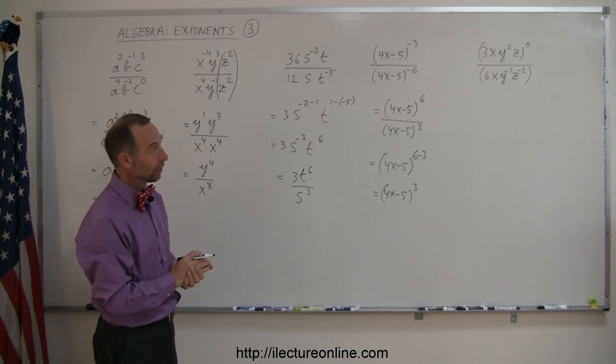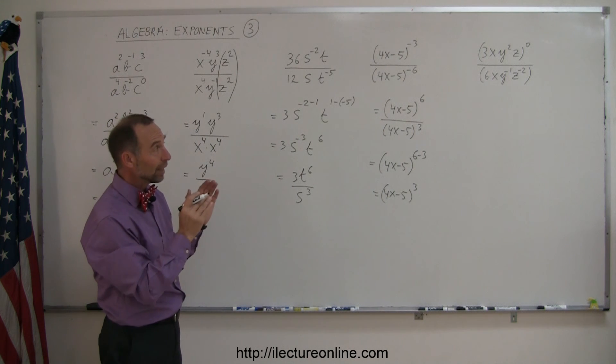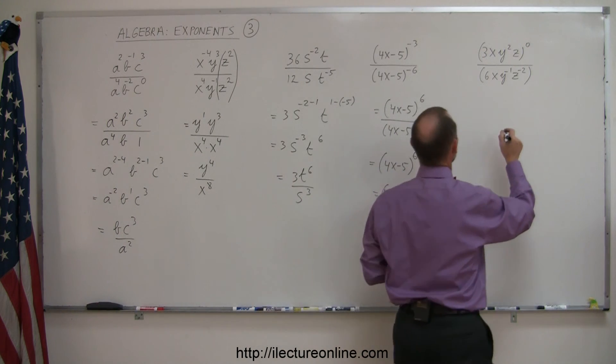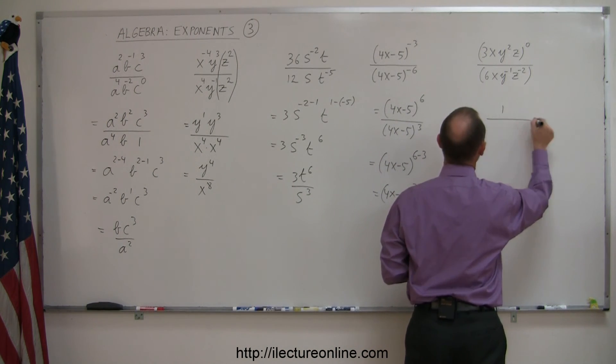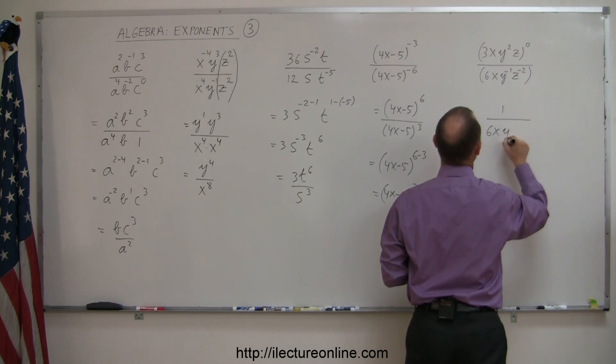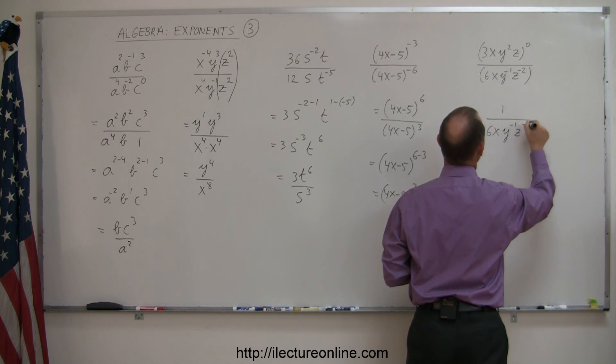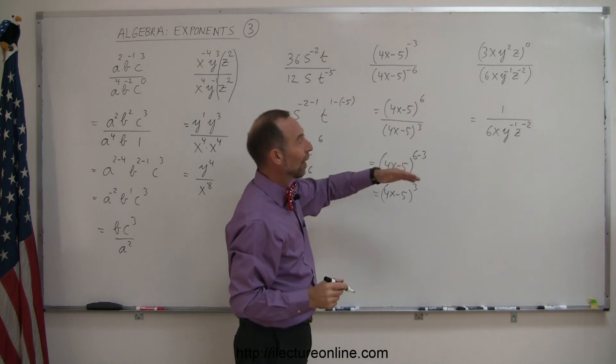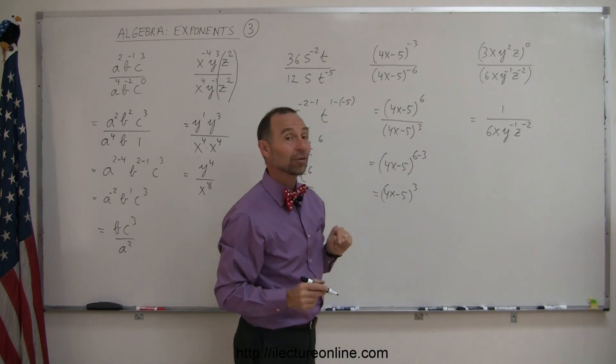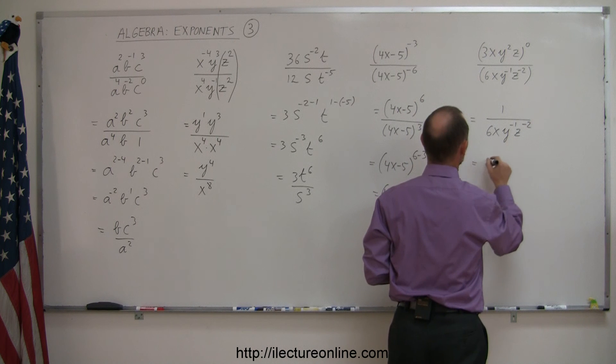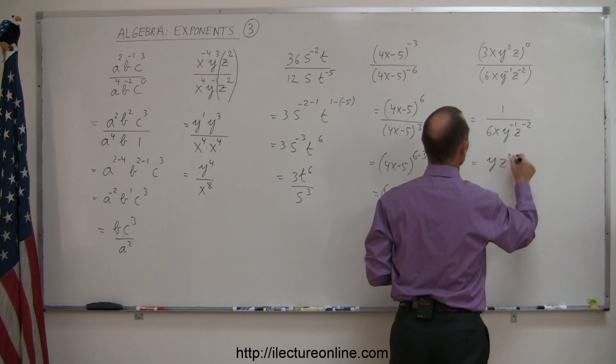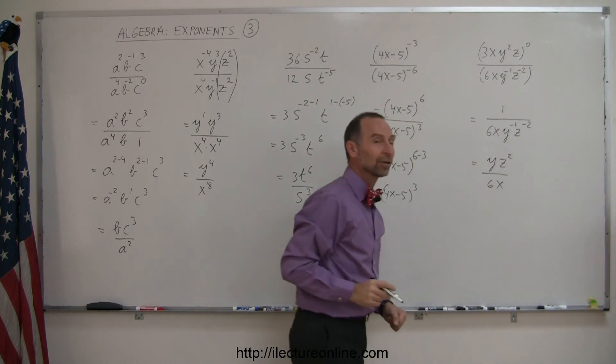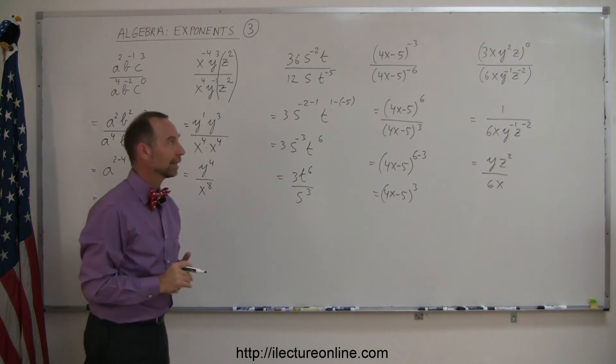And finally looking at our last problem, right away you should catch that the numerator has a zero exponent. So this whole numerator simply becomes 1. So this can be written as 1 over 6xy to the minus 1, z to the minus 2. That was easy. Now, moving the y and the z to the numerator to turn those exponents into positive exponents, this becomes y and z squared in the numerator divided by 6x in the denominator, and we are done there. That's how you simplify that example.